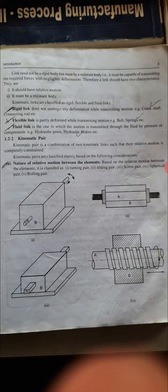The links are classified as Rigid Link, Flexible Link, and Fluid Link. Rigid Link is one where deformation is negligible. Flexible Link is partially subject to deformation, like belts and springs. Fluid Link is one where motion is transferred through fluid, for example hydraulic press and brakes.